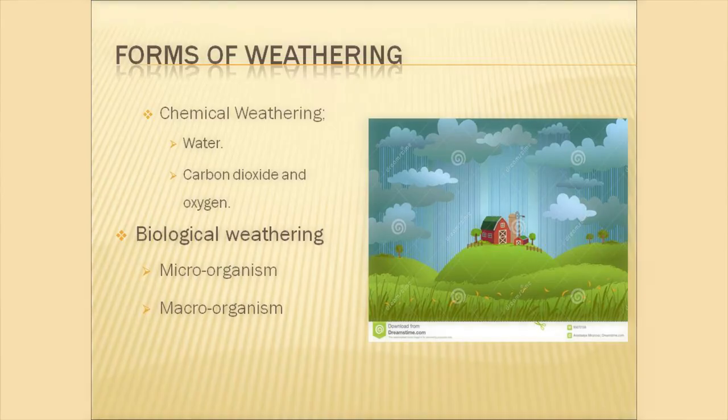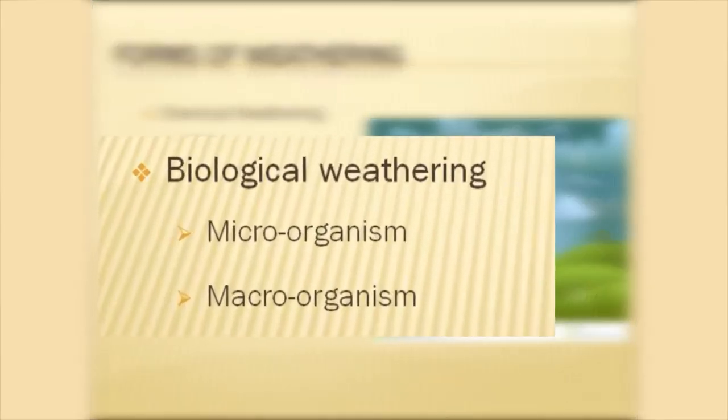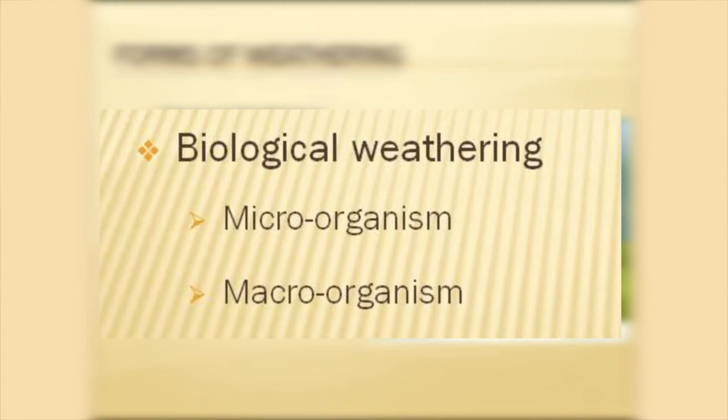The last type of weathering is biological weathering. Biological weathering involves microorganisms and macro-organisms. Microorganisms are very small organisms that cannot be seen with the naked eye, while macro-organisms are larger organisms such as earthworms, slugs, and wood lice found in the soil. The actions of these organisms cause soil to form.